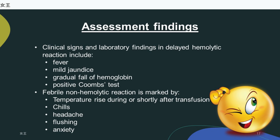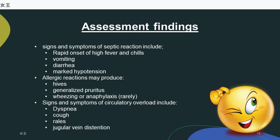Febrile non-hemolytic reaction is marked by temperature rise during or shortly after transfusion, chills, headache, flushing, and anxiety. Signs and symptoms of septic reaction include rapid onset of high fever and chills, vomiting, diarrhea, and marked hypotension. Allergic reactions may produce hives, generalized pruritus, and wheezing or anaphylaxis (rarely). Signs and symptoms of circulatory overload include dyspnea, cough, rales, and jugular vein distension.